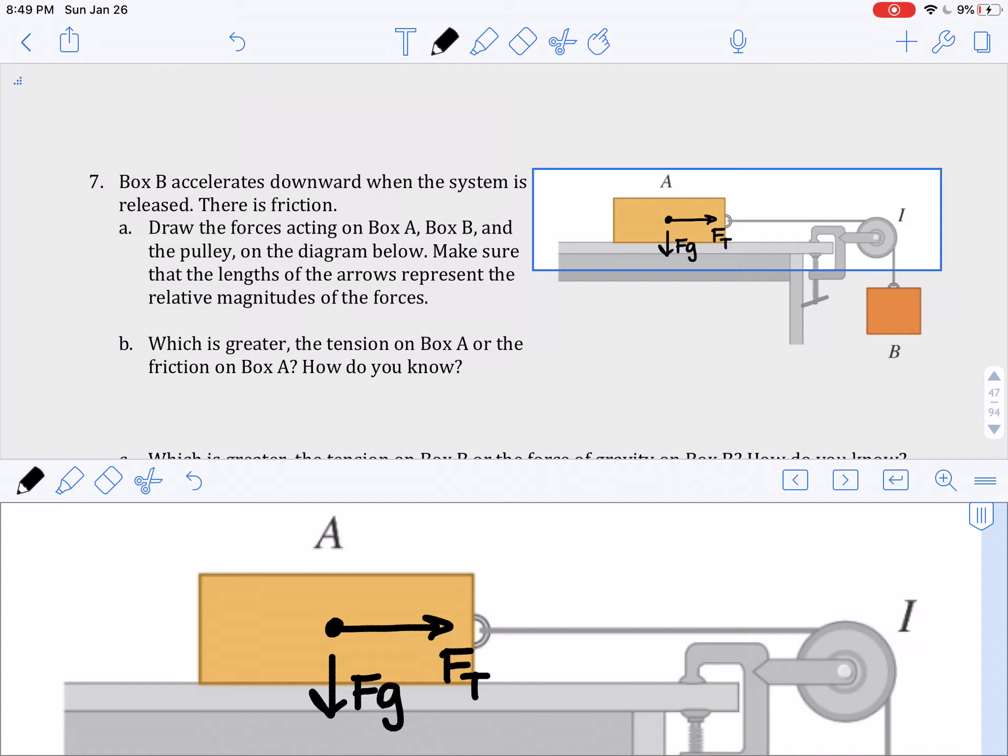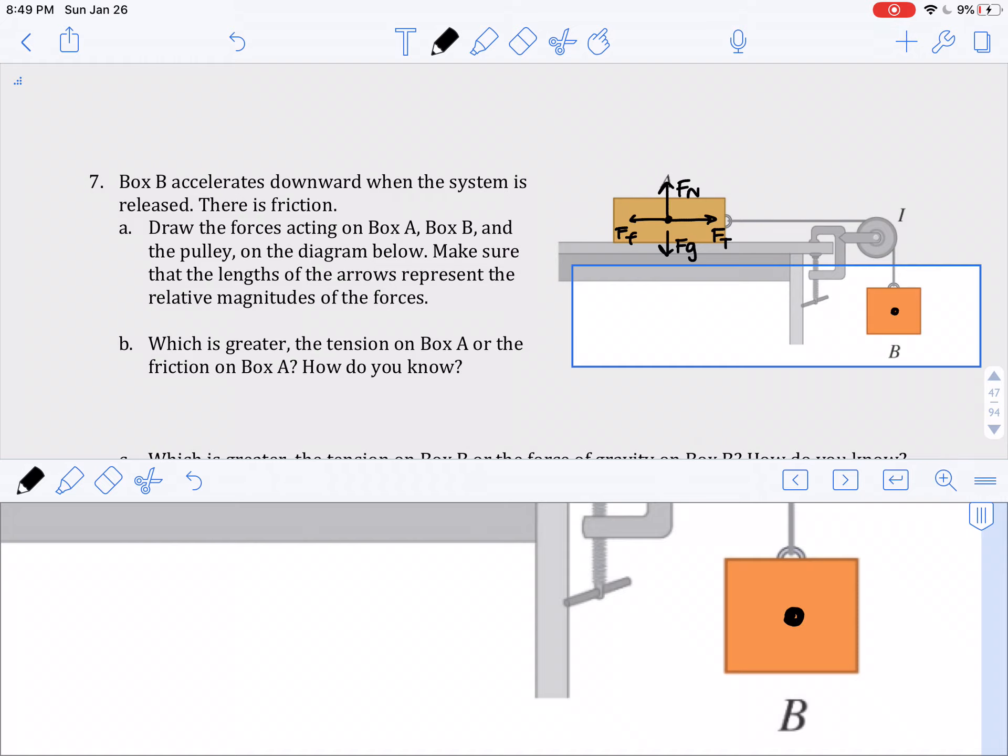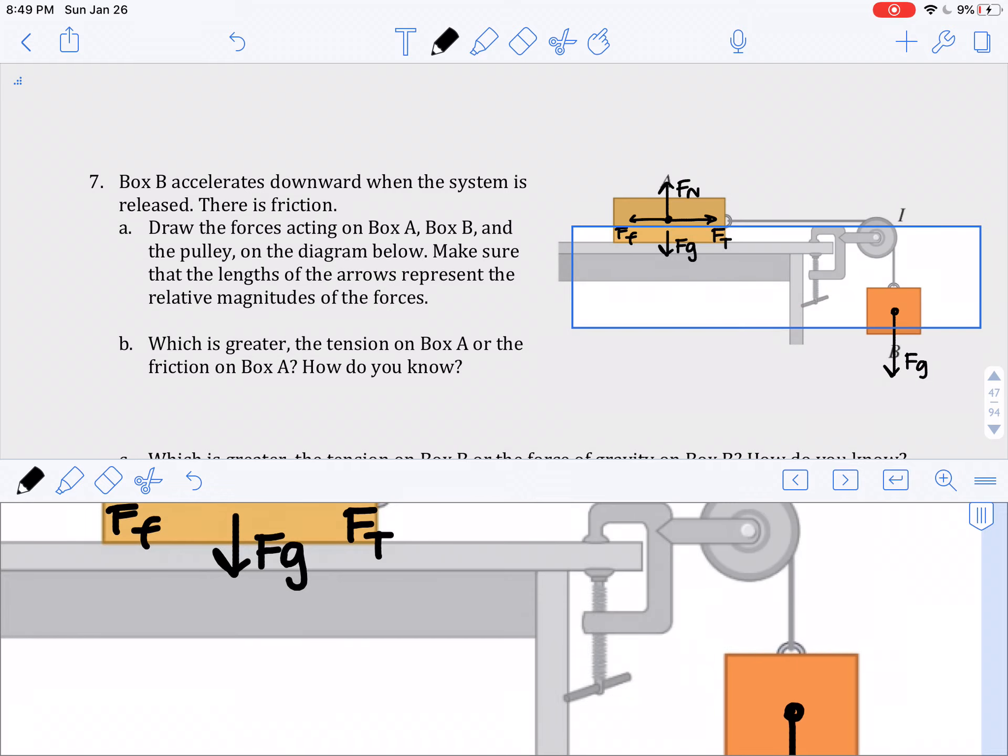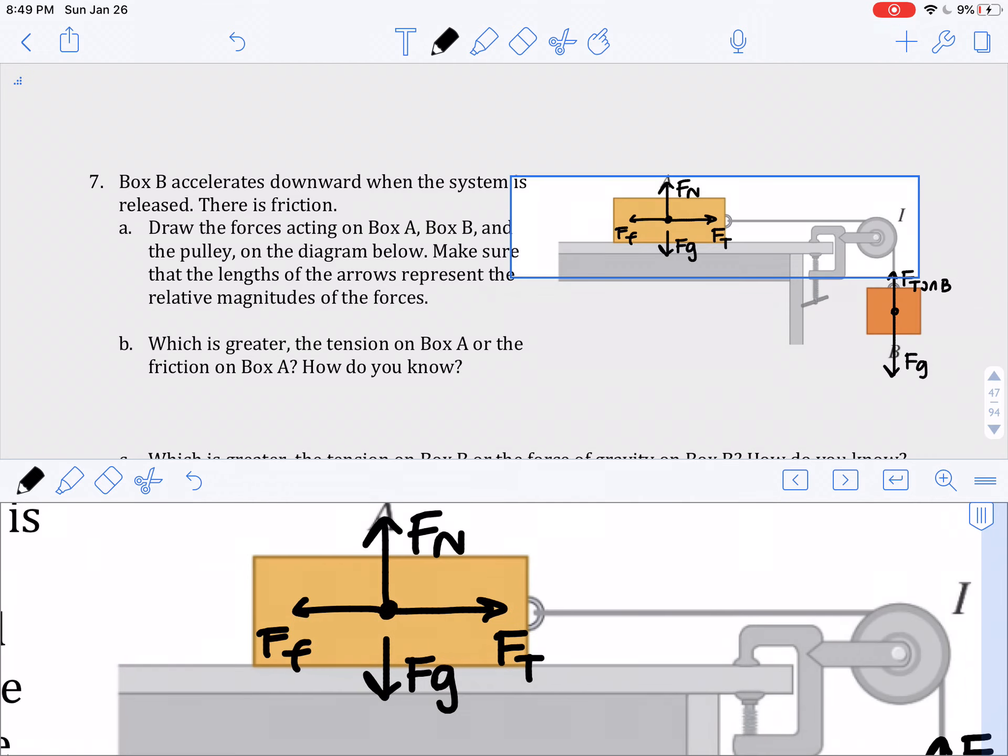So obviously we've got a force of gravity, a normal force, and then we say that there's a force of friction too. And then for B, there's FG, which has to be bigger than FT. And I'm going to label these on B and this one on A.